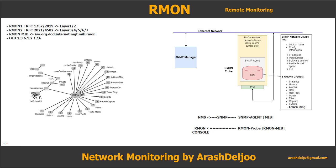In the RMON MIB, the OID structure is: ISO, Organization, DOD, Internet, Management, then RMON MIB. The RMON OID number is 1.3.6.1.2.1.16. Within the RMON MIB, there are different groups that will each be explained.